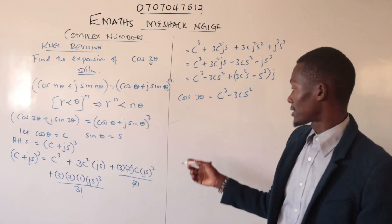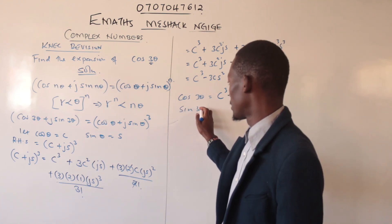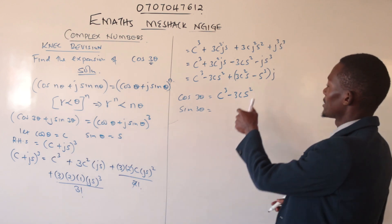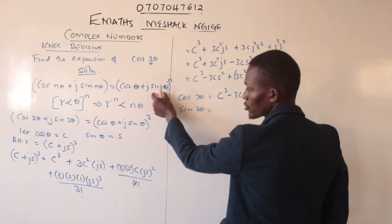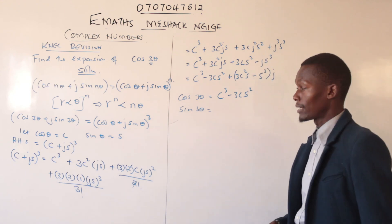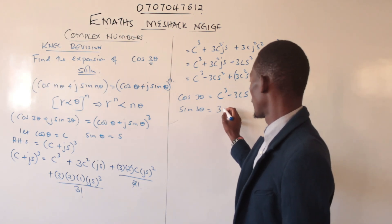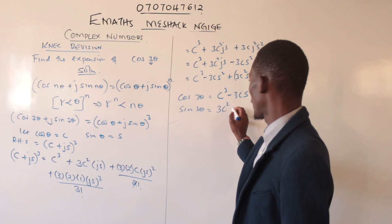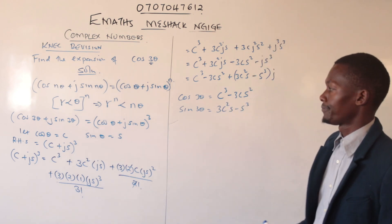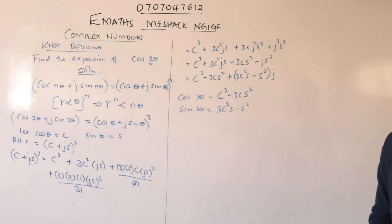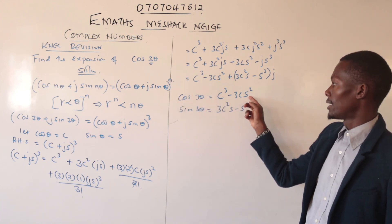If we want to find sin(3θ), we check the imaginary part, because sine belongs to the imaginary part. So sin(3θ) = 3c²s − s³.